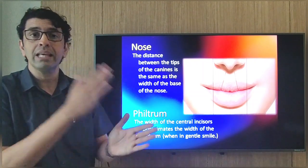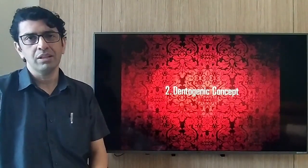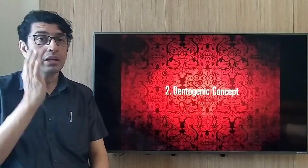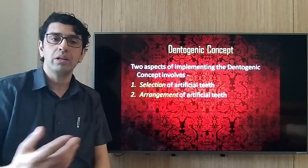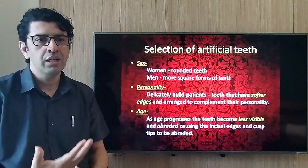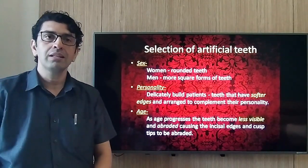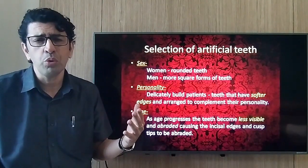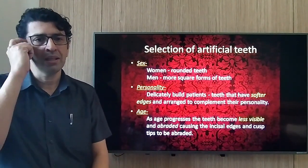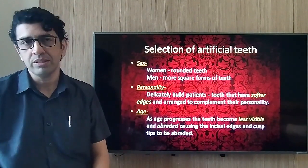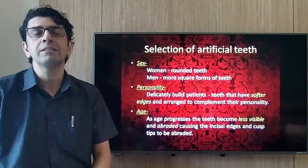Moving to dentogenic concepts: when we spoke about selection of teeth, we covered sex, personality, and age. For females, more rounded teeth forms are selected; for males, more square. Delicate personalities get softer edges; athletic personalities get more square or sharper teeth. With age, teeth become less visible, with more abrasion on incisal edges and cusp tips. These differences in selection of artificial teeth also influence their arrangement.